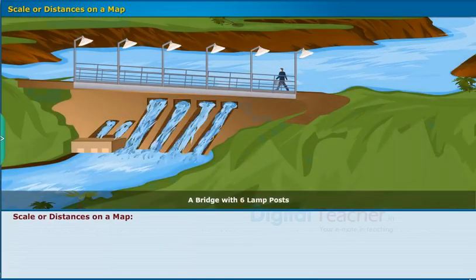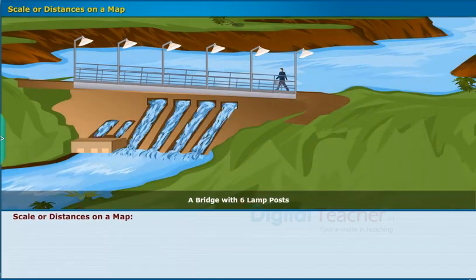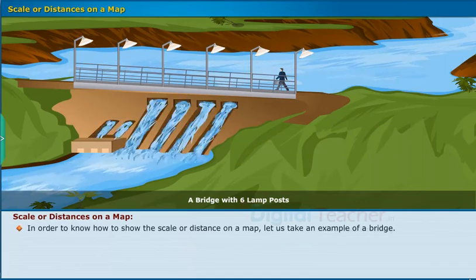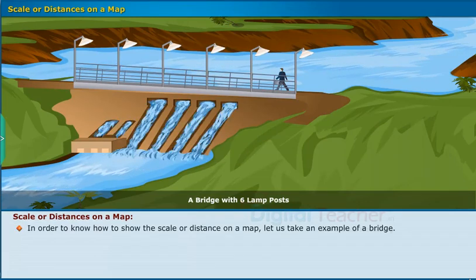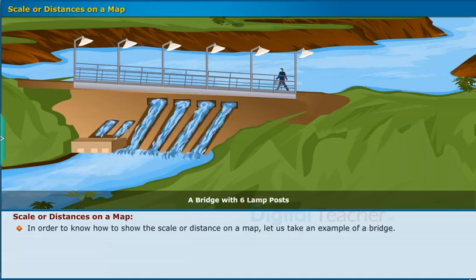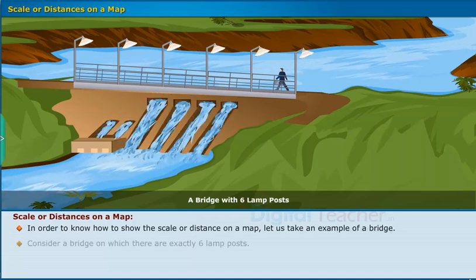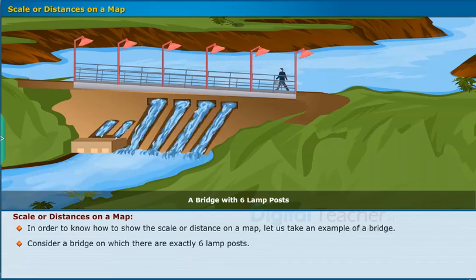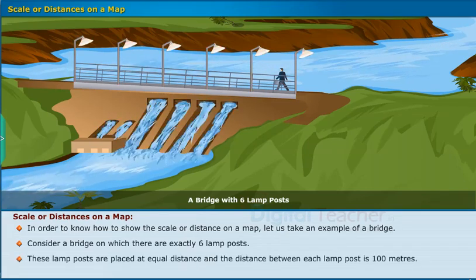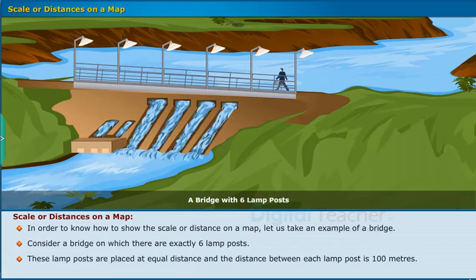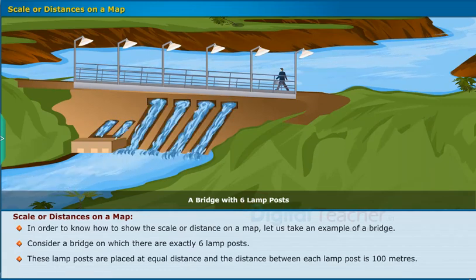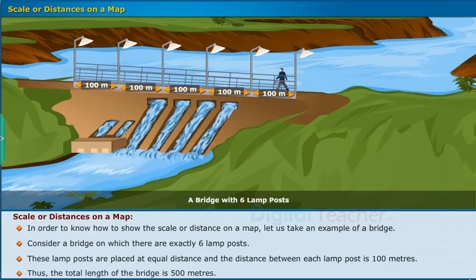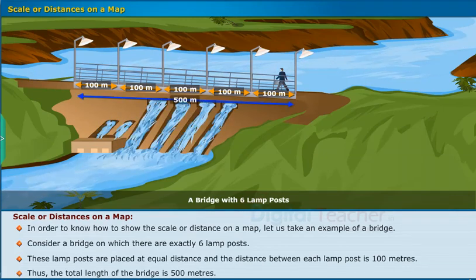Now let us look at the topic of scale, or distances on a map. To understand how to show scale or distance, let us take an example of a bridge. Consider a bridge that has exactly six lamp posts placed at equal distances, with 100 meters between each lamp post. Thus, the total length of the bridge is 500 meters.